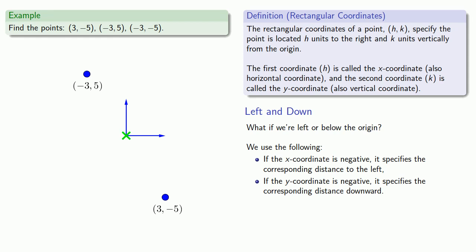Finally, for the third point, both coordinates are negative, so that means we're going to go to the left and down. We're going to go left 3 units, then down 5 units, and label this with the coordinates (-3, -5).